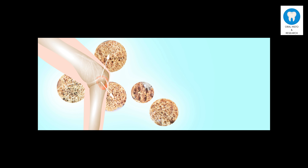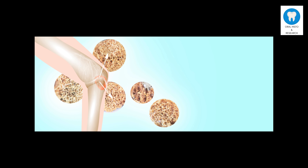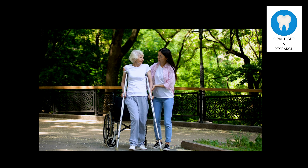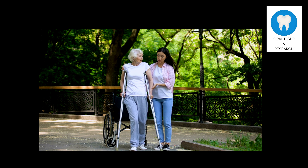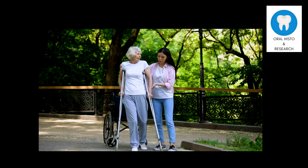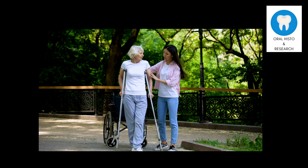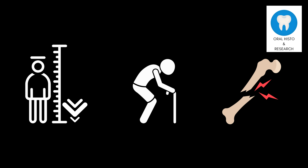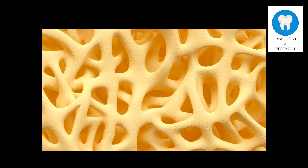Osteoporosis is a progressive bone disease characterized by decreased bone mass and density, leading to an increased risk of fractures. Its onset is often gradual, with no noticeable symptoms until a fracture occurs. However, common signs include loss of height over time, stooped posture, and fractures occurring from minor trauma.